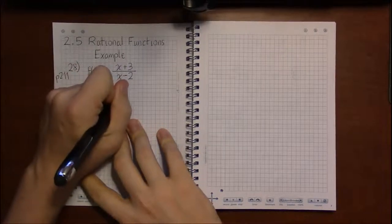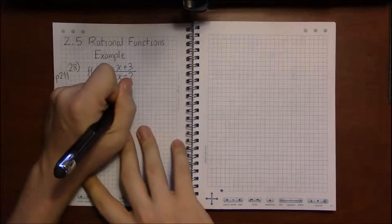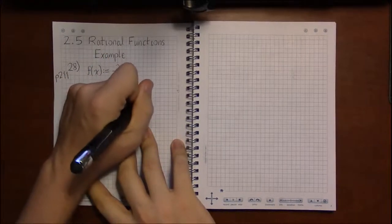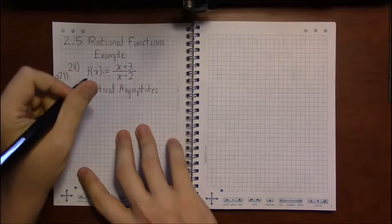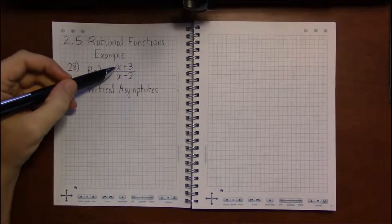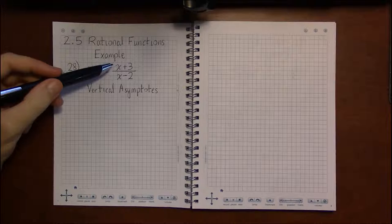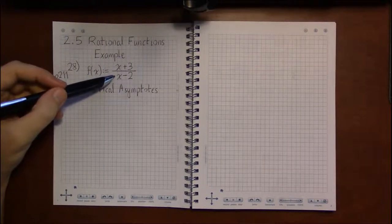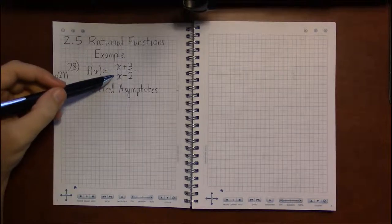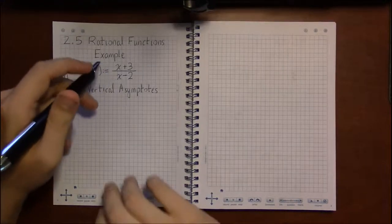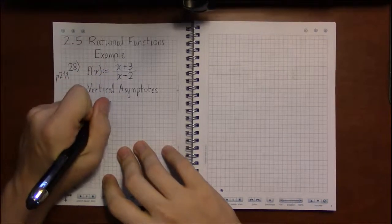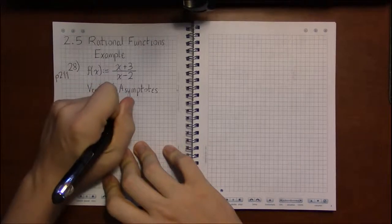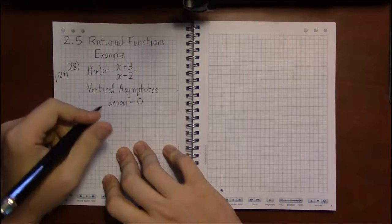We have to remember what part of this formula tells us about vertical asymptotes. When the numerator is zero, that tells us about x-intercepts. And when the denominator is zero, that's what tells us about vertical asymptotes. Vertical asymptotes occur when the denominator is equal to zero.